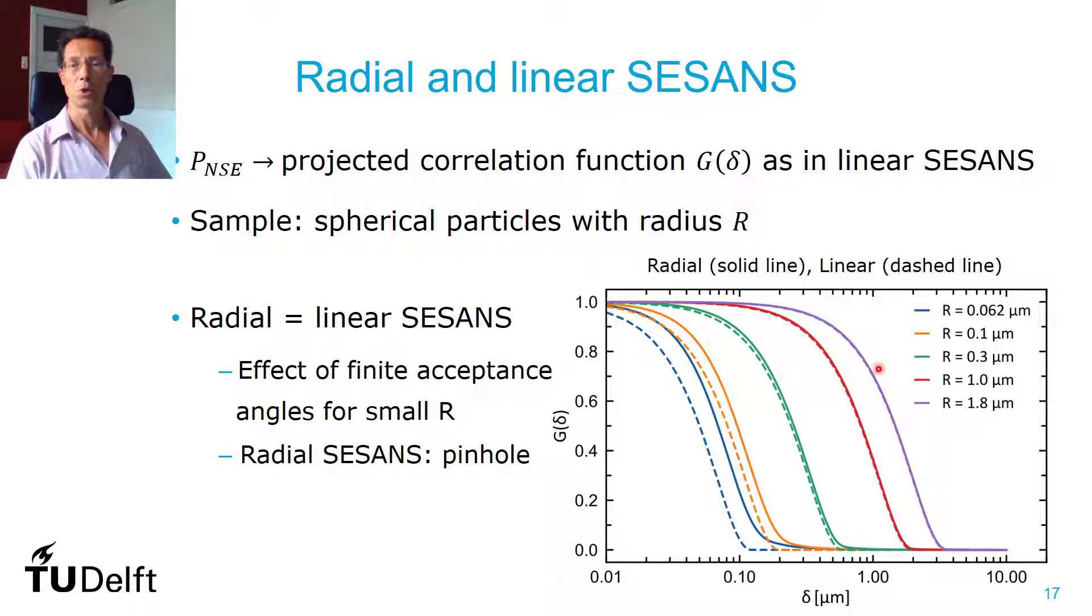But for smaller ones, something like 100 nanometers, you start to see deviations, and 60 nanometers, even stronger, and that's due to the finite acceptance angle that you will have, due to the finite size that you can have for the shifters. There we took a radius of 20 millimeters, and it's just an acceptance angle problem.